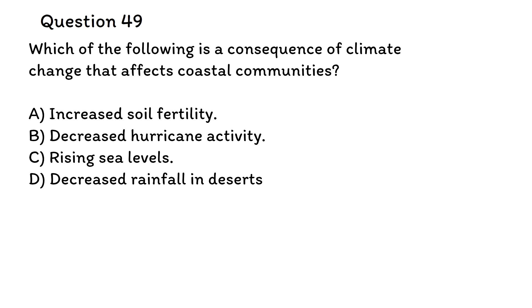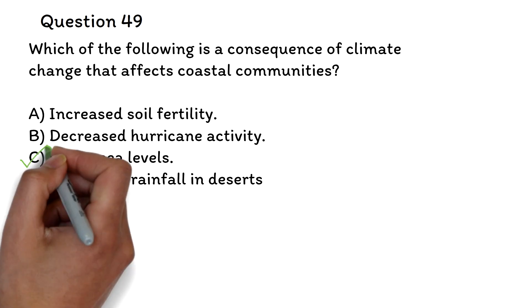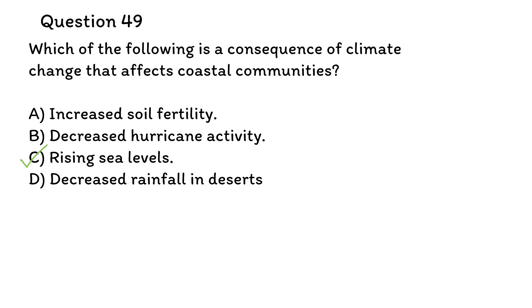Question 49. Which of the following is a consequence of climate change that affects coastal communities? A. Increased soil fertility. B. Decreased hurricane activity. C. Rising sea levels. D. Decreased rainfall in desert. The correct answer is C, rising sea levels. As global temperatures rise, polar ice caps and glaciers melt, contributing to higher sea levels. Additionally, warming oceans cause thermal expansion of water, further elevating sea levels. This results in increased coastal erosion, flooding, and displacement of communities, and also threatens ecosystems such as mangroves and coral reefs.